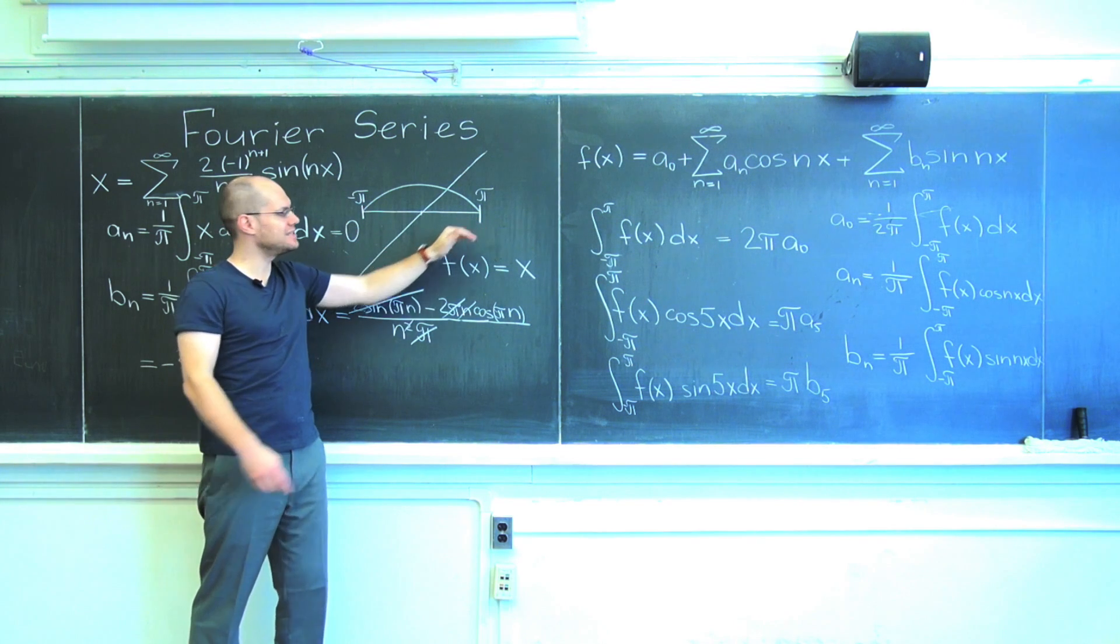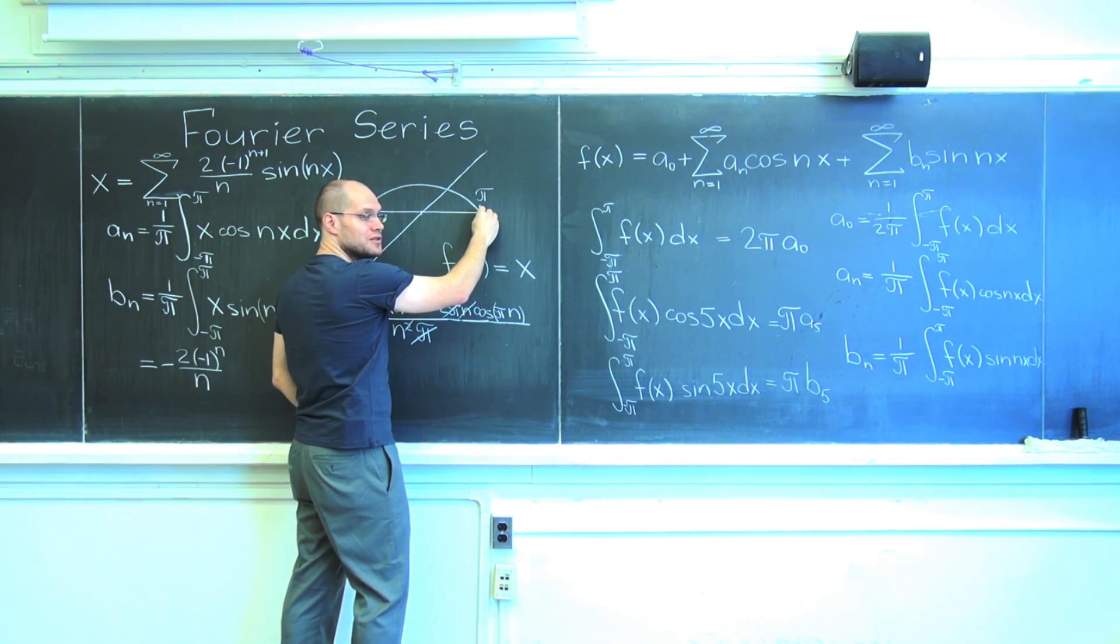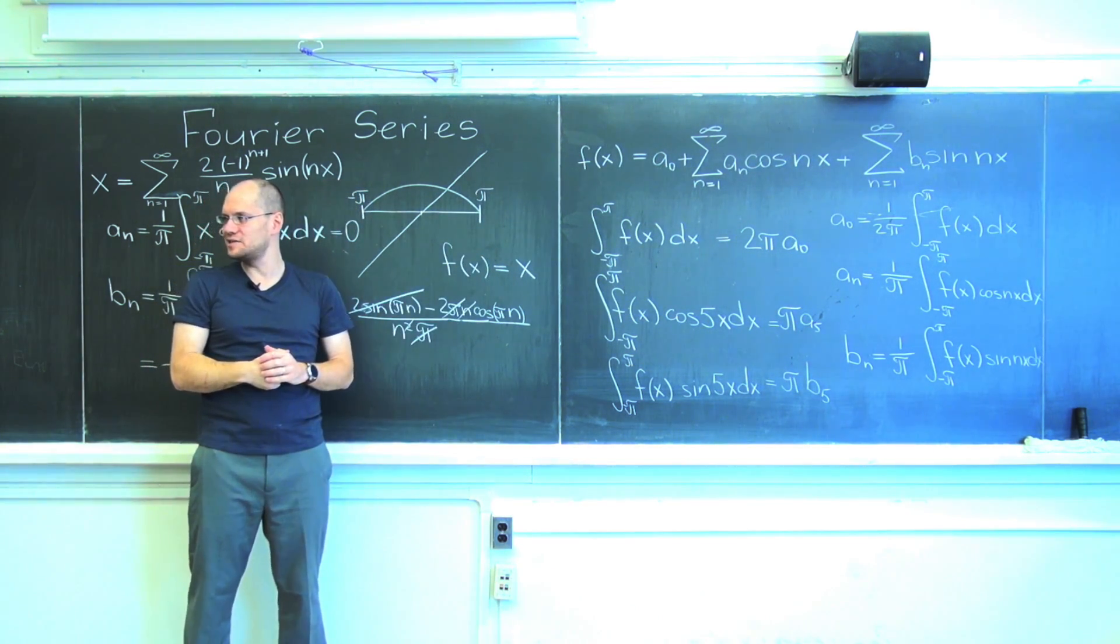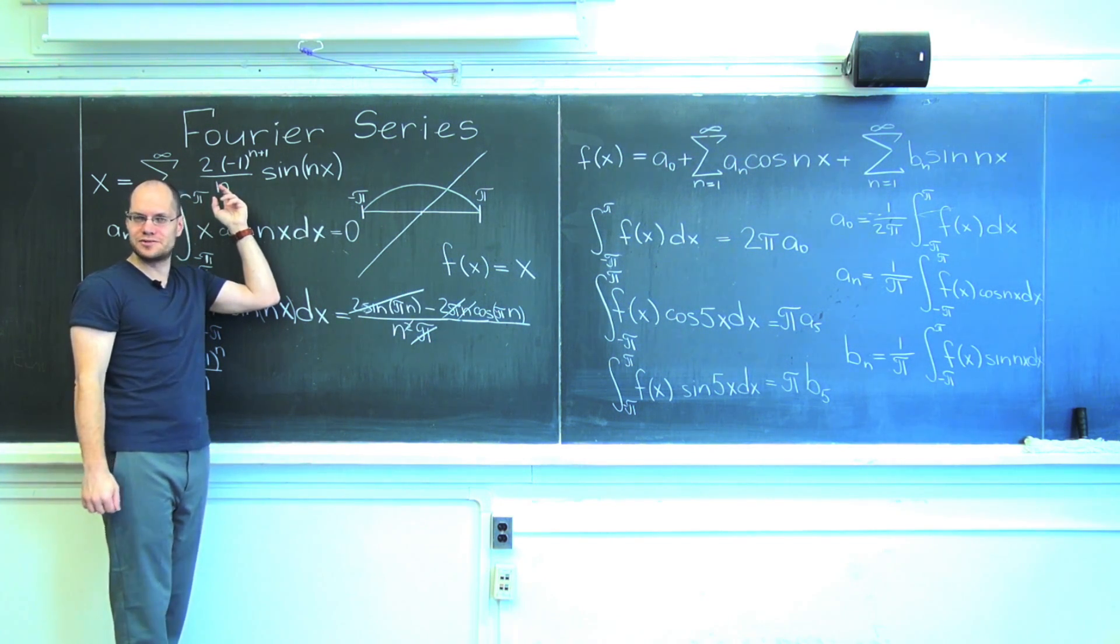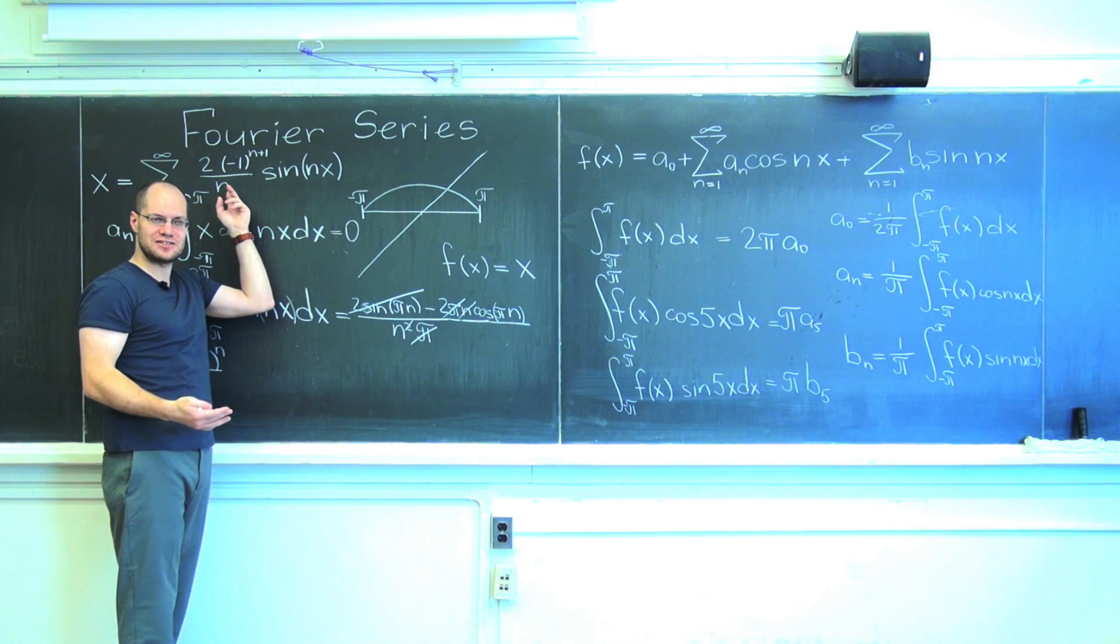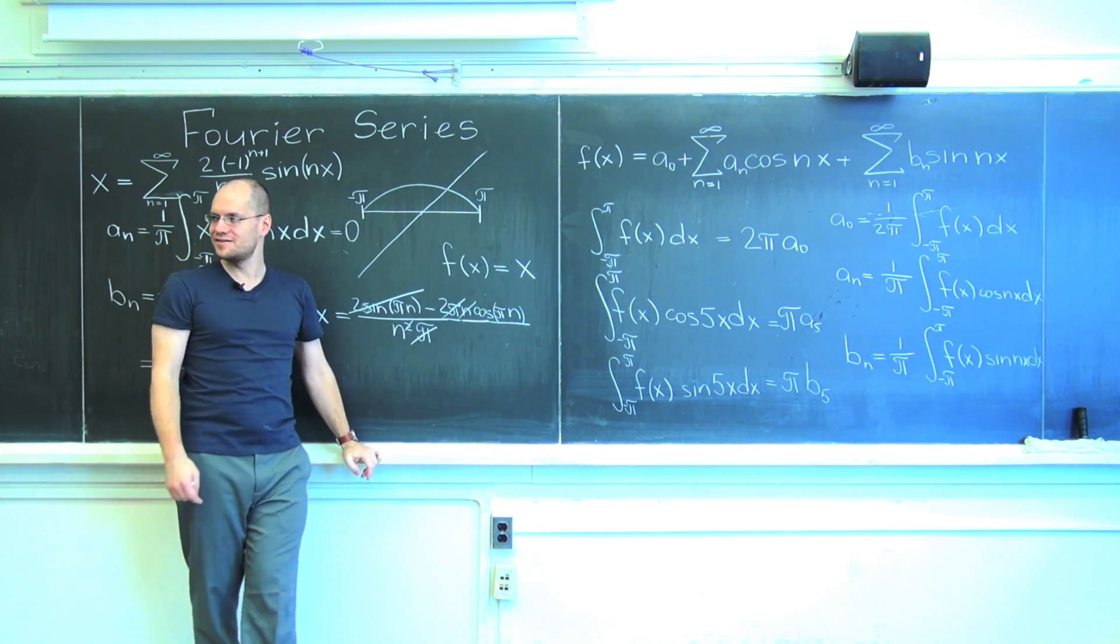And if we look at a function that's continuous and its derivative is continuous, but the second derivative is discontinuous, you might imagine a function that just comes in nice and smooth here, but not smooth enough for the second derivative to be continuous. Its coefficients will decay as one over n cubed.